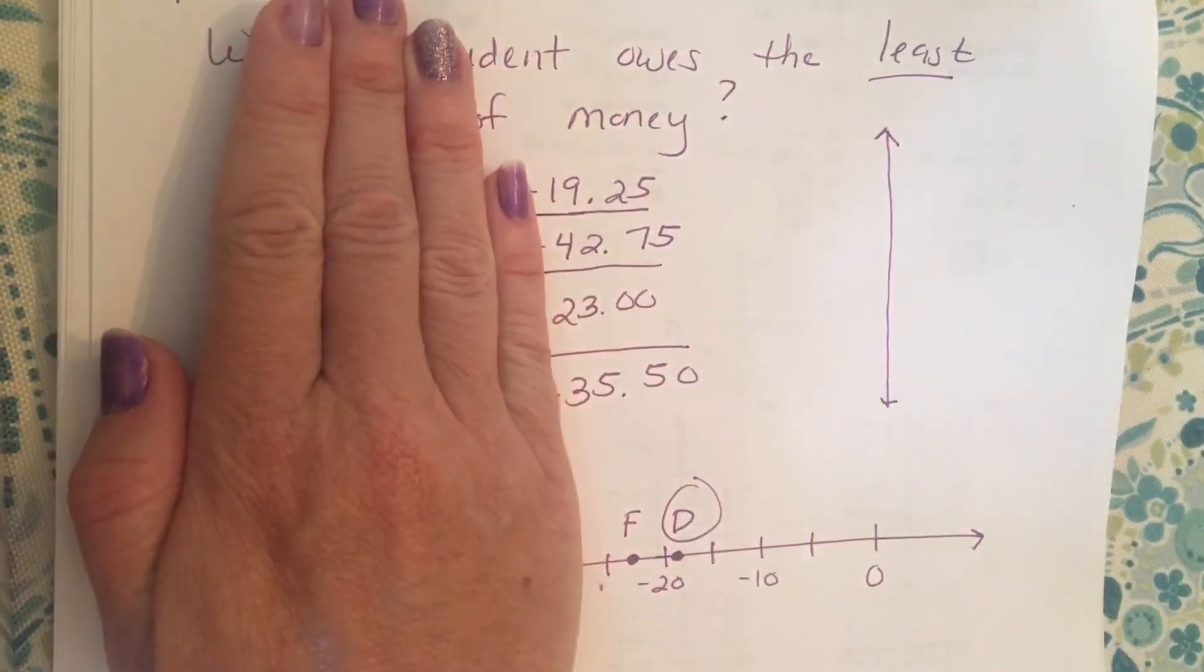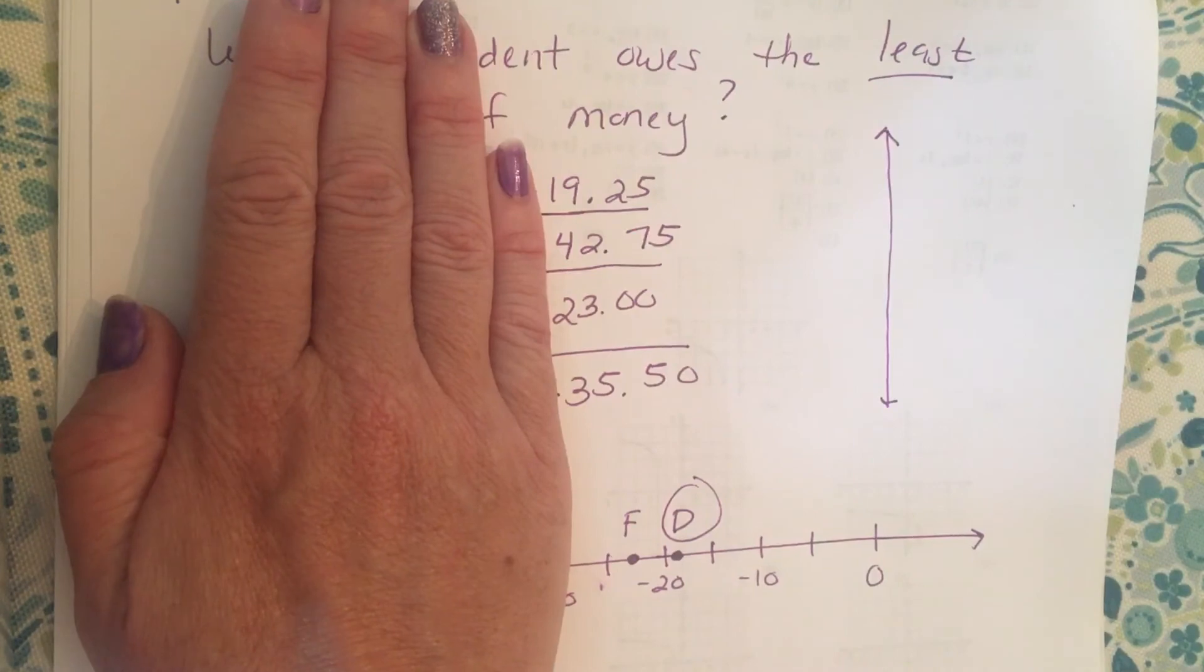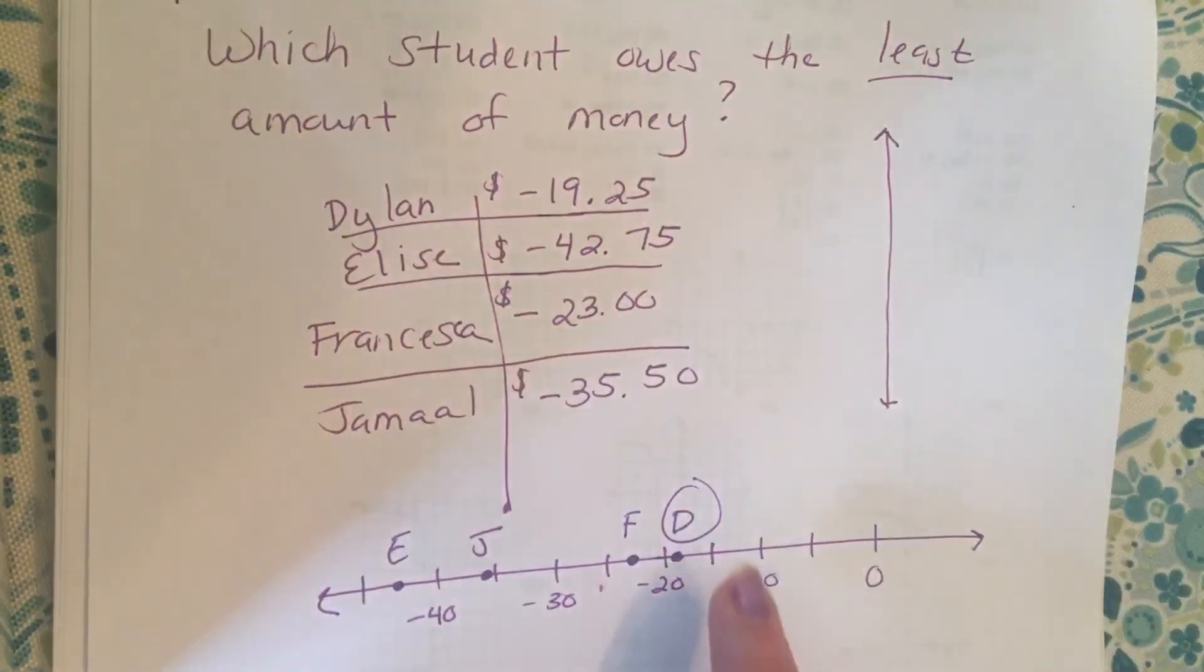And if it helps, you could consider their absolute values. Who owes the least amount of money? Sometimes just taking away those negatives helps you see the problem. Well, the person who owes 19 dollars owes the least amount of money, and that again would be Dylan.